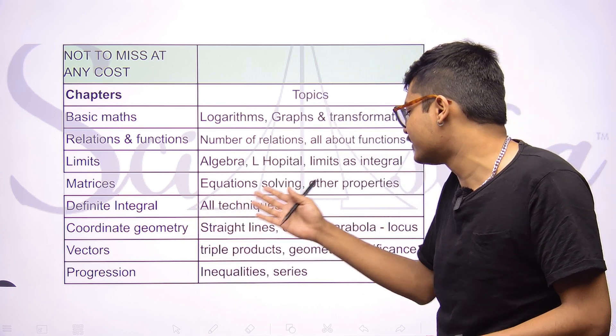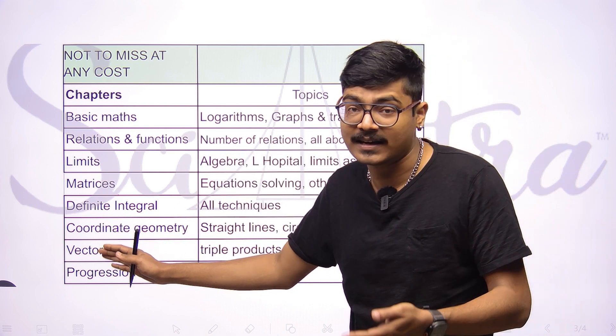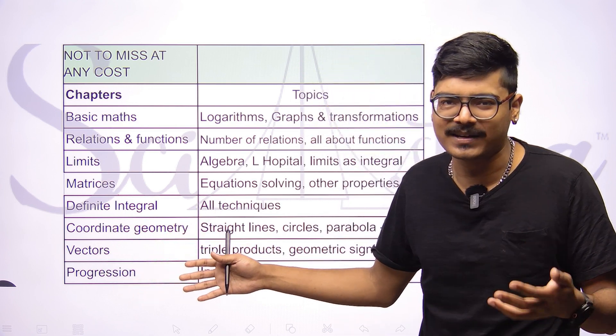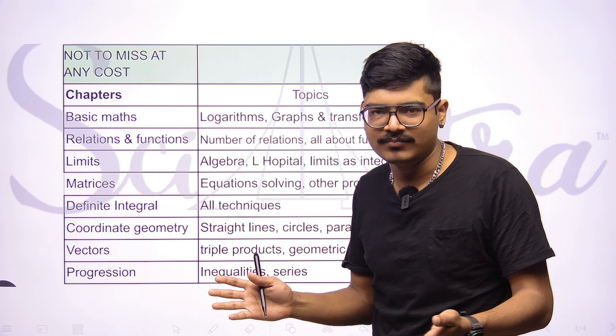Then we talk about vectors, triple products, geometric significance, these are all standard formulas. Progressions, this is one chapter which is very scoring because there are only three formulas you need to know. So progressions, AP, GP, HP, you need to know all these. Talk about inequalities, sum of series, easy chapters.